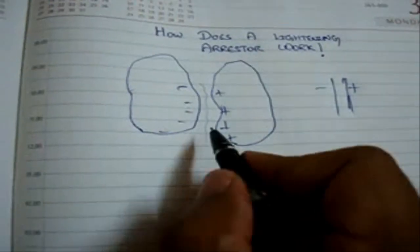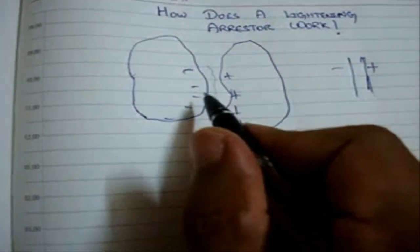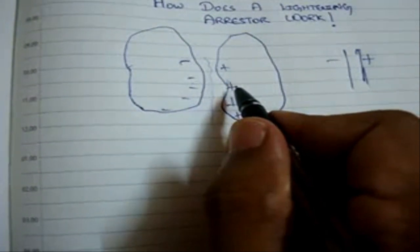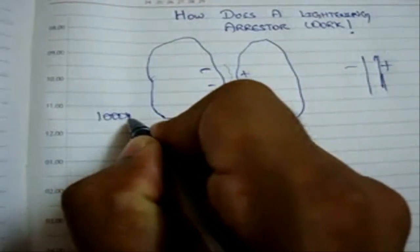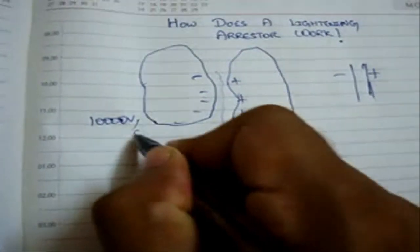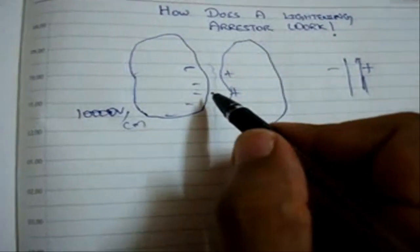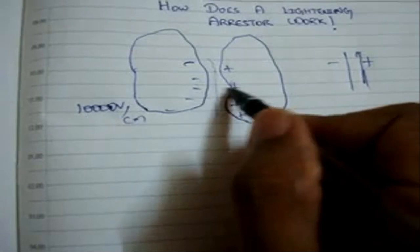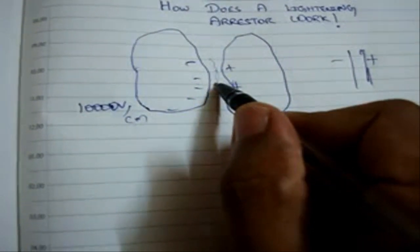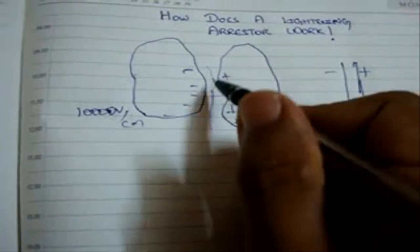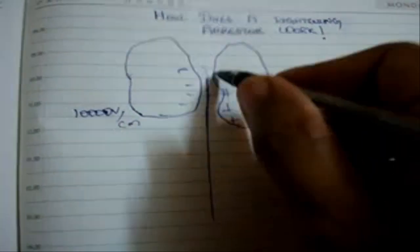When the charge gets accumulated to such an extent, say 10,000 volts per centimeter, then the air in between gets ionized. Thus these two clouds get discharged, forming a lightning arc which may run even for kilometers.